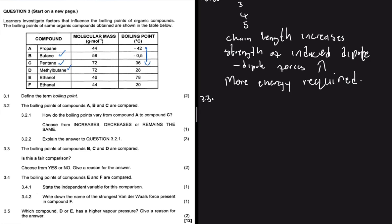If we look at the molar mass of B, it's 58. The molar mass of C is 72. And the molar mass of D is 72. So no, I don't think this is a fair comparison. And then, obviously, they're going to ask us why. Because compound B has a different molar mass.